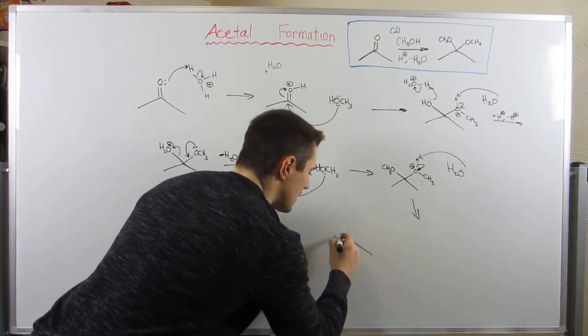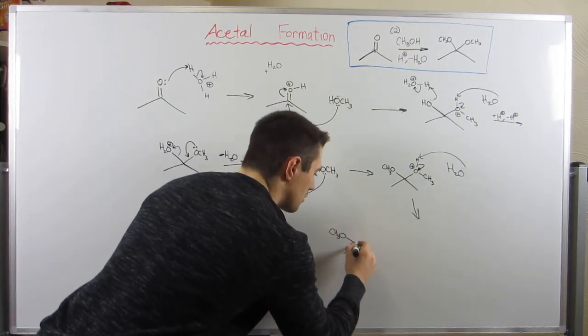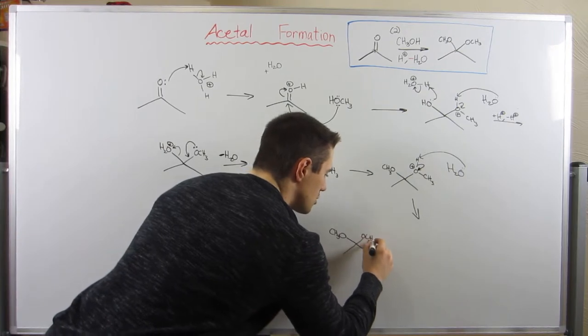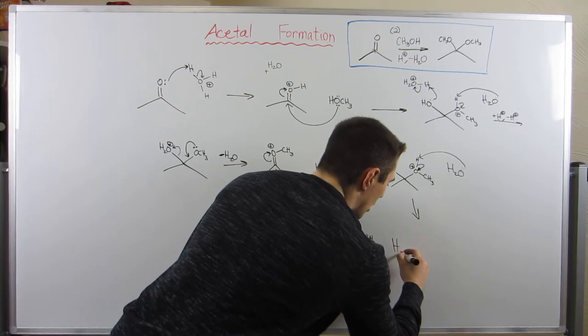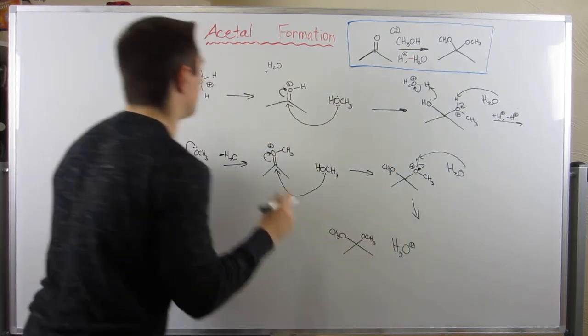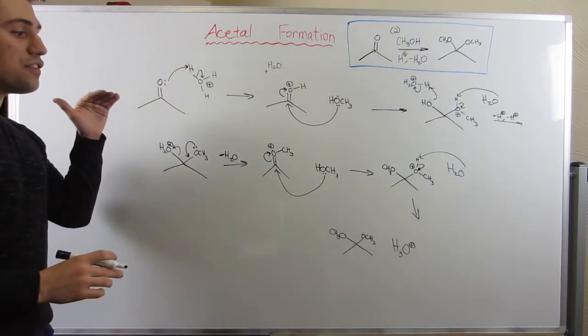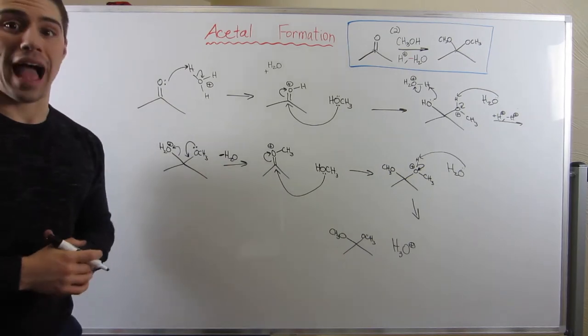So you can see we formed the acetal. We have our two ethers on that one carbon that was initially the carbonyl carbon. We have recovered our catalytic acid that we started out in the beginning. And that is the forward mechanism of acetal formation.